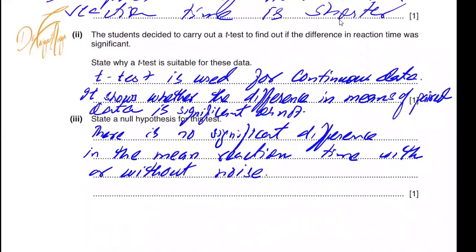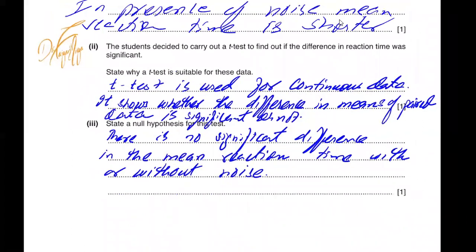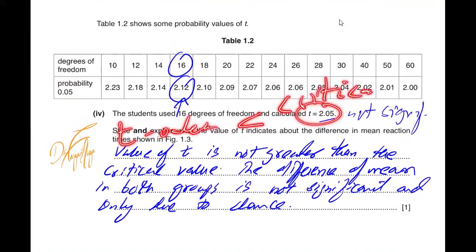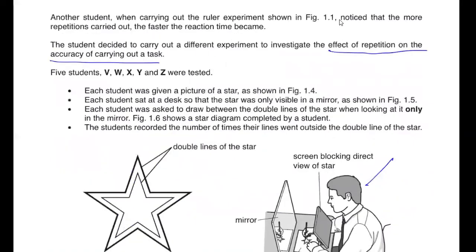Furthermore it says the students decided to carry out a t-test to find out if the difference in the reaction time was significant. State why t-test was suitable. T-test is used for continuous data. It shows whether the difference in the mean of paired data is significant or not. State the null hypothesis for this test: there is no significant difference in the mean reaction time with or without noise. Table 1.2 shows the probability values of t. The students used 16 degrees of freedom and the probability of 0.05 was taken. The calculated value of t was 2.05 and the critical value comes out to be 2.12. If the t value calculated is 2.05, in this case your t value is less than the critical value. If the t value is less than the critical value it means that the difference is there but the difference in both groups is not significant, it's only due to chance.